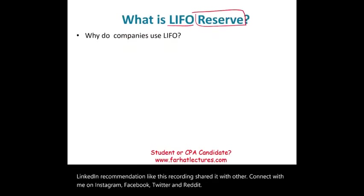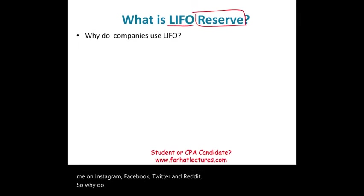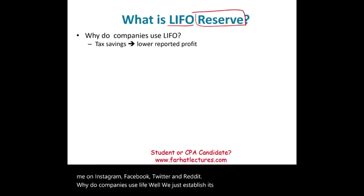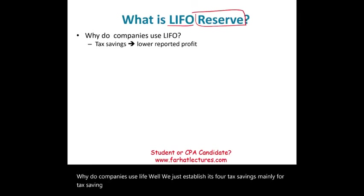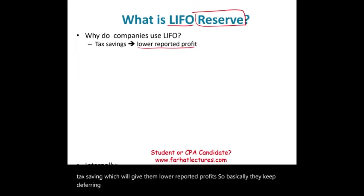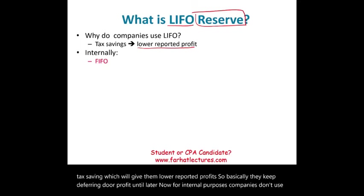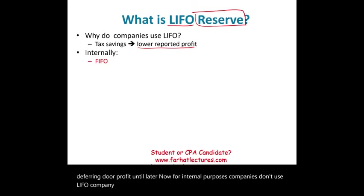So why do companies use LIFO? Well, we just established it's mainly for tax savings, which gives them lower reported profit. Basically, they keep deferring their profit until later. For internal purposes, companies don't use LIFO — they use FIFO or some other method, like the average method.